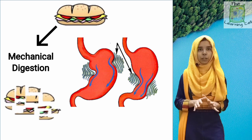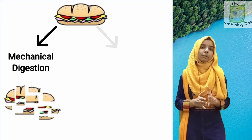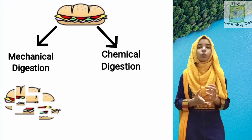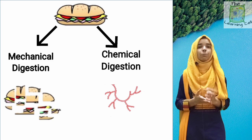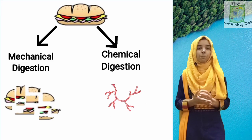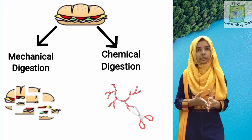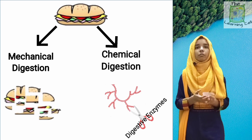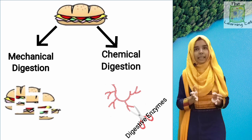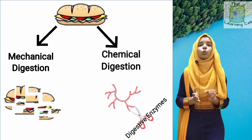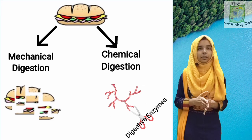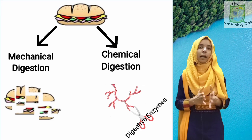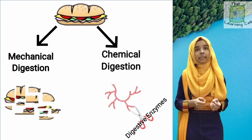The second type is chemical digestion. In chemical digestion, food's complex compounds are broken down into simple compounds by breaking the chemical bonds. For example, when we intake sucrose, the body converts sucrose, which is a disaccharide, into glucose, which is a monosaccharide. This is possible because of biocatalysts which are called enzymes.